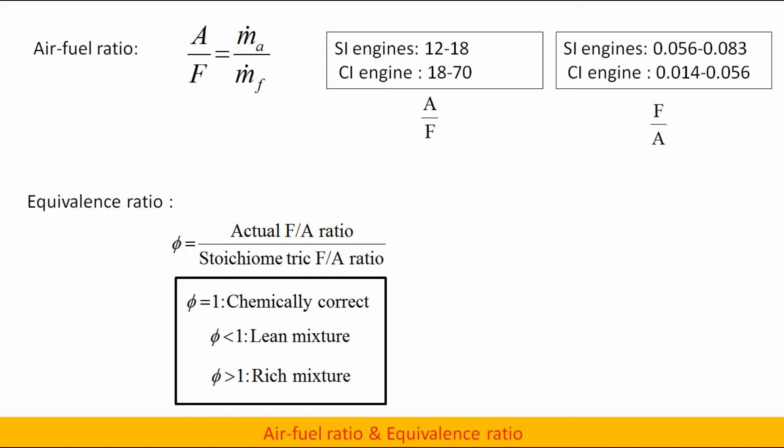When φ equals 1, it is called a chemically correct mixture. When φ is less than 1, it is called a lean mixture. When φ is greater than 1, it is called a rich mixture.